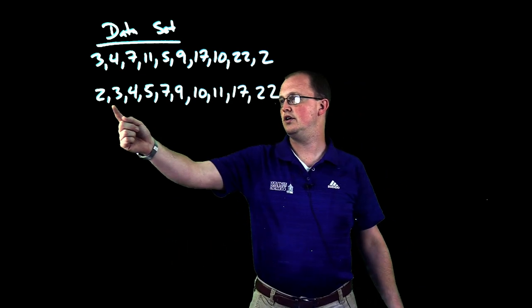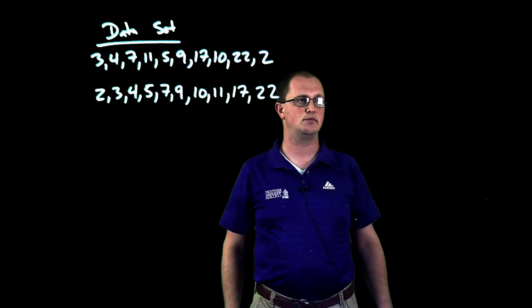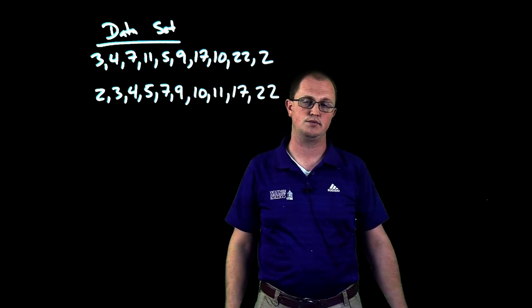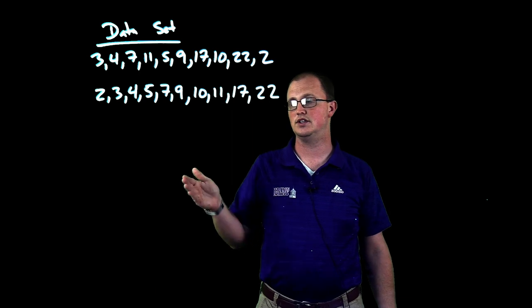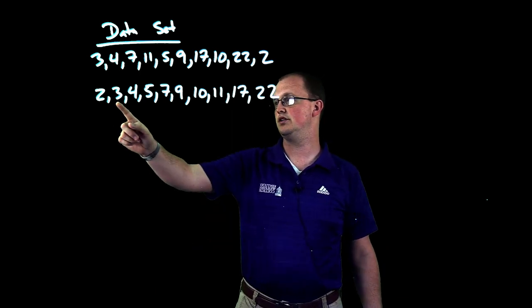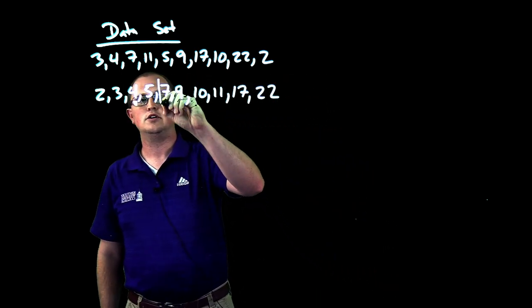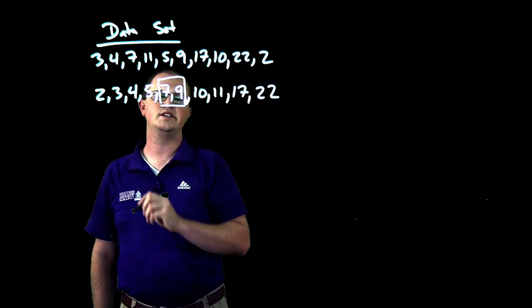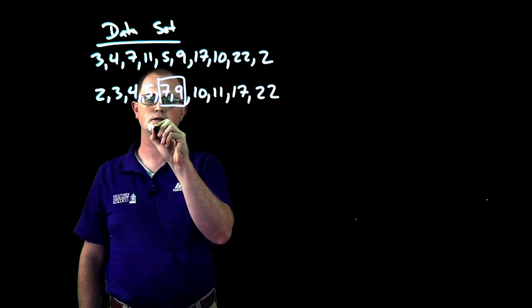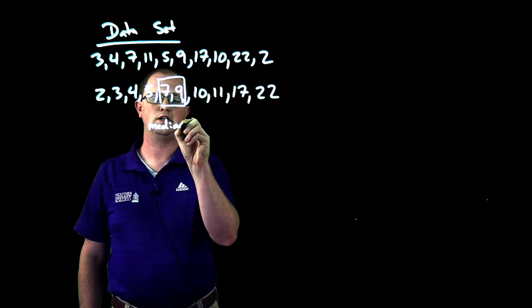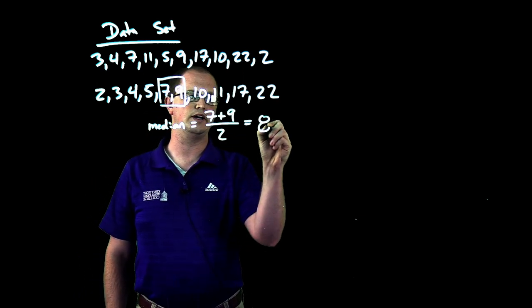We have 10 data points, so an even number of data points means that we don't have a single middle value. The 5th and 6th values in this order are going to be our two middles. So we need to take the mean of 7 and 9. Our median is equal to 7 plus 9 divided by 2, which is 8.